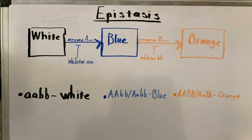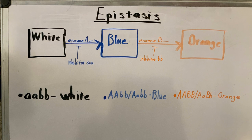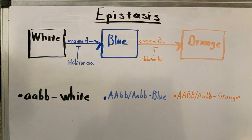The inhibitor recessive A means that if the dog had a recessive A gene, there wouldn't be a possibility it could turn blue. And the next junction over is the inhibitor recessive B, which says the same: if a dog has a recessive B, it wouldn't be able to turn orange — it would just stay blue.